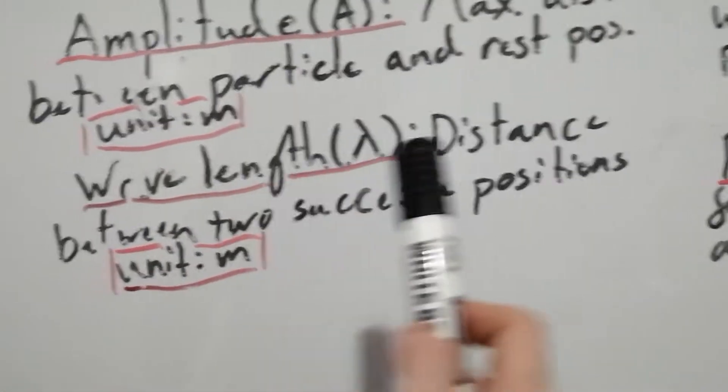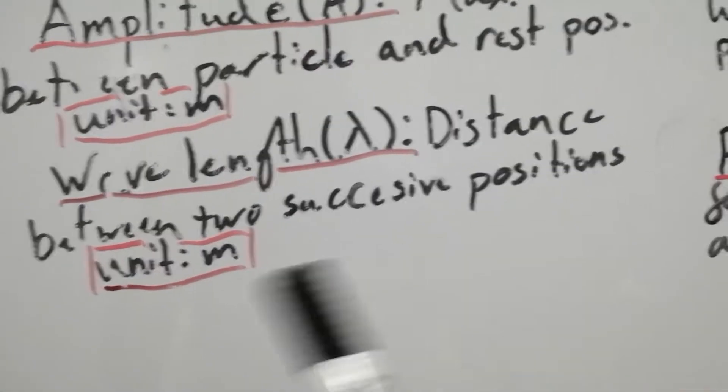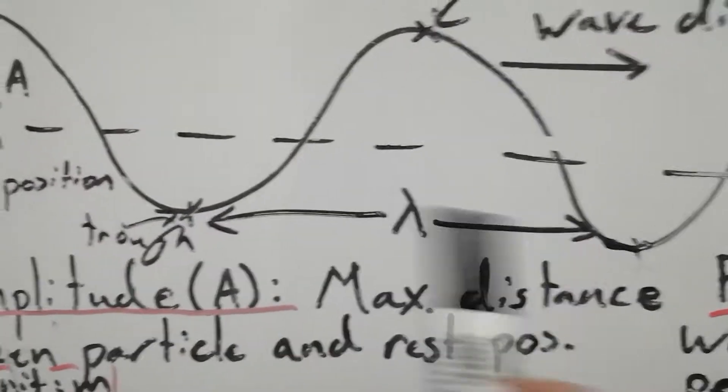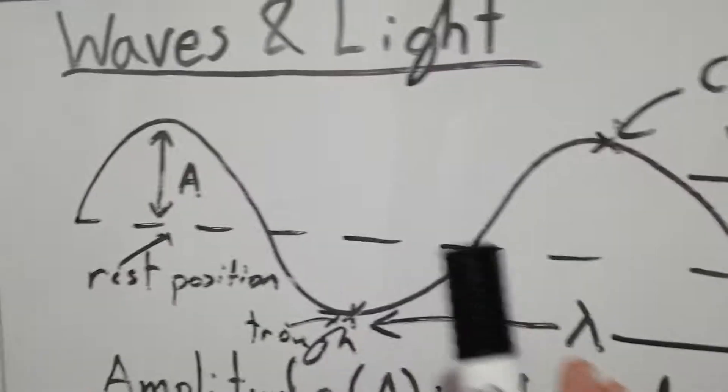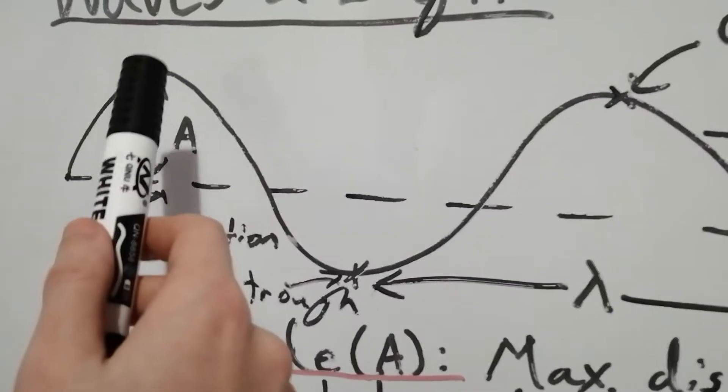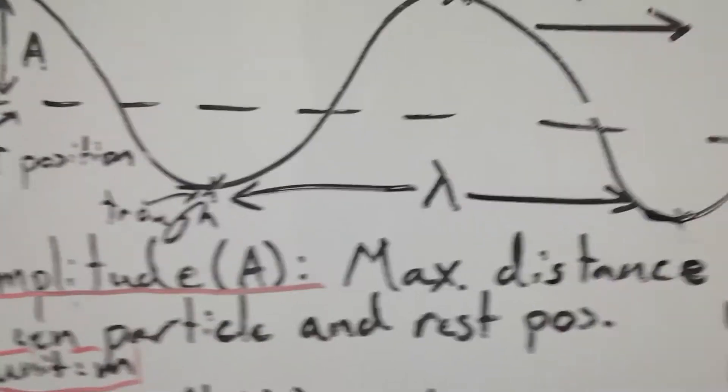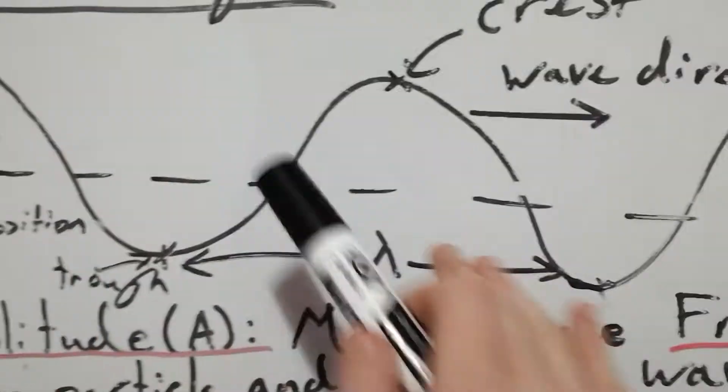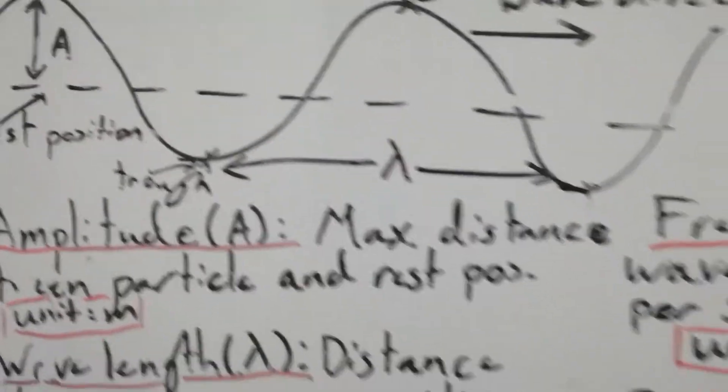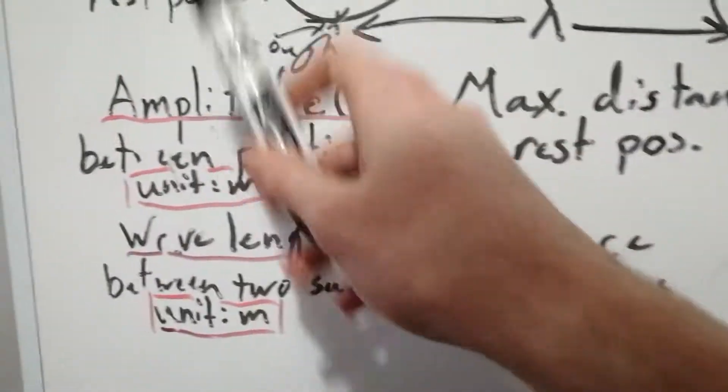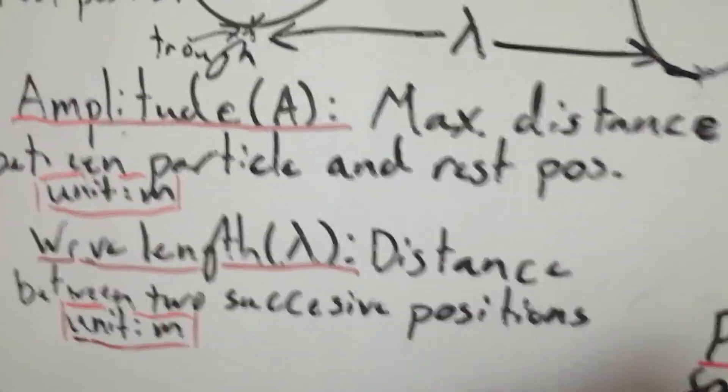Next up is wavelength, which is the distance between two successive positions. If we have a trough and a trough and we measure that, that gives us lambda or wavelength. A crest to a crest, again lambda or wavelength, or any two successive positions on the wave will give us lambda. These are both measured in meters because they're distances.